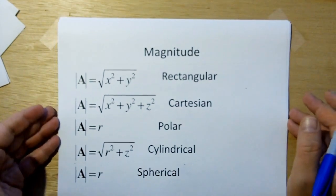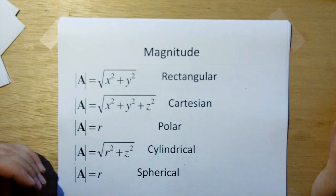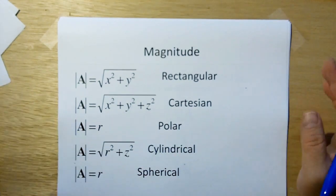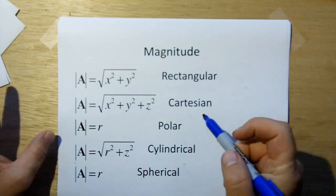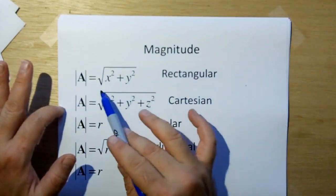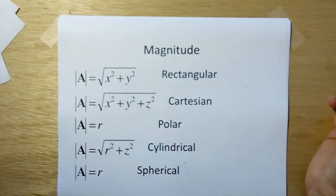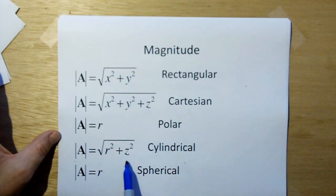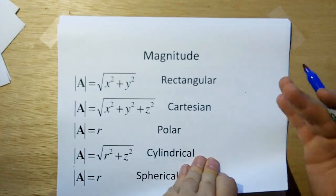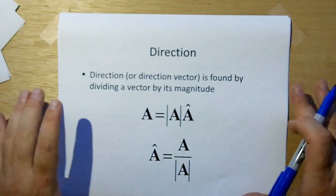For all the different coordinate systems, here is how you compute the magnitude. For polar and spherical, it's really easy — you just take the value r, that's the magnitude. For the Cartesian coordinate systems, which includes rectangular and Cartesian, you just do the Pythagorean theorem to get the magnitude. For cylindrical, it's the Pythagorean theorem again, but using r and z.